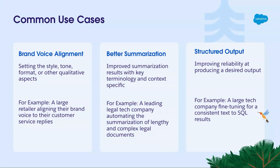To make it more concrete, we'll walk through the use cases. Daryl, why don't you talk about some use cases here. Great — let's talk about common use cases for fine-tuning. One is brand voice alignment: setting the tone, style, format, and other aspects — for example, a large retailer aligning their brand voice to customer service replies. Another is better summarization with key terminology, context-specific — for example, a legal tech company automating summarization of lengthy legal documents. A third is structured output, improving reliability — for example, fine-tuning for consistent text-to-SQL results with a large tech company.